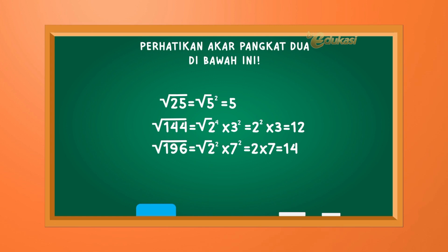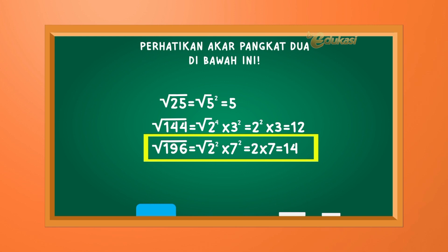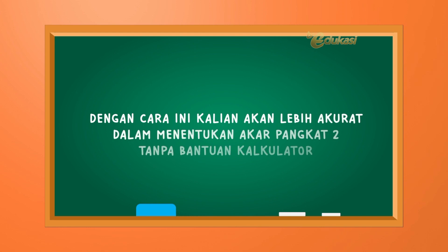Terakhir anak-anak, lihat: akar pangkat dua dari seratus sembilan puluh enam sama dengan akar pangkat dua dari dua pangkat dua dikali tujuh pangkat dua. Sama dengan dua kali tujuh. Sama dengan empat belas. Dengan cara ini, kalian akan lebih akurat dalam menentukan akar pangkat dua tanpa bantuan kalkulator.